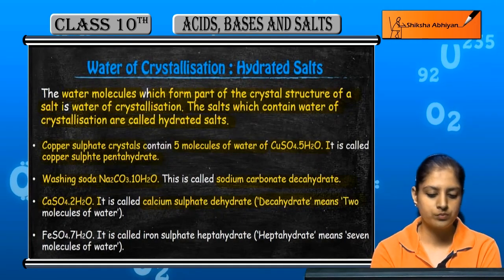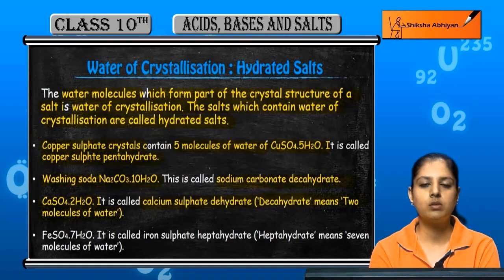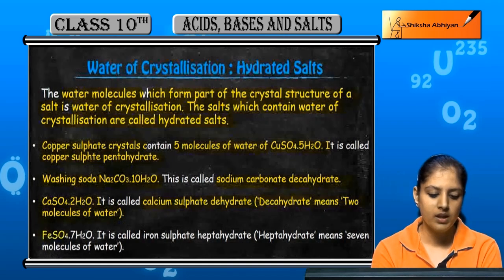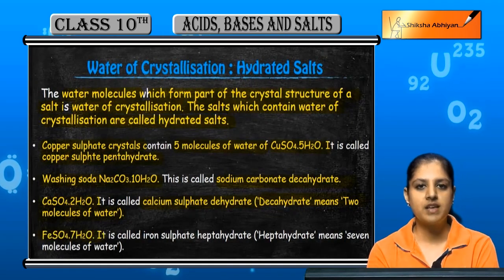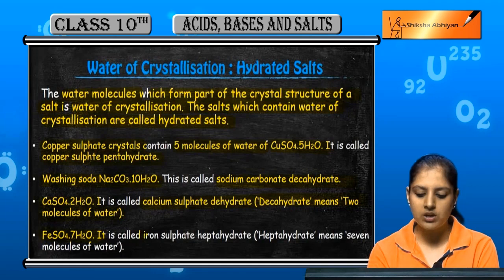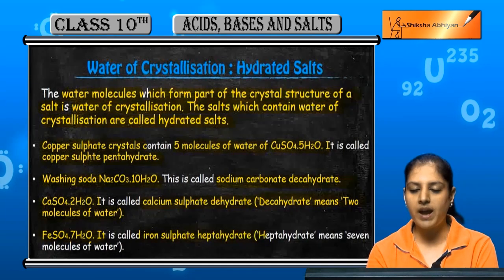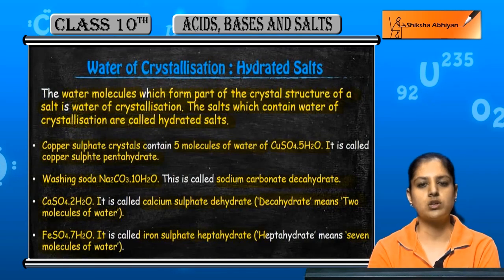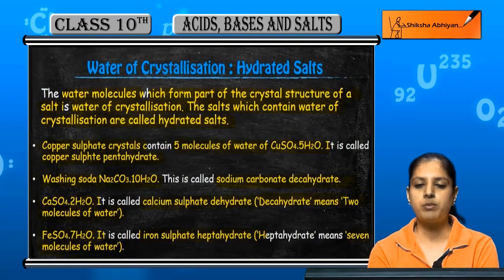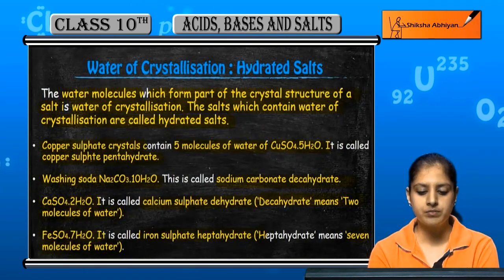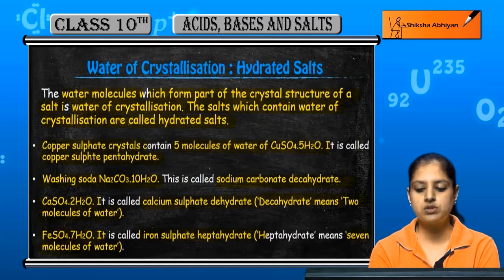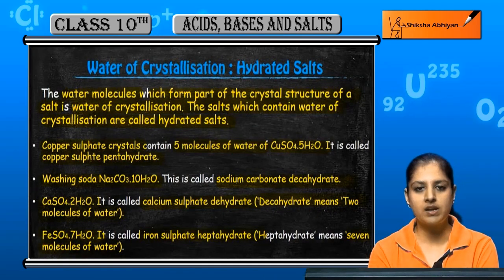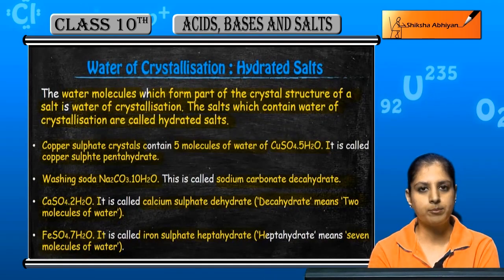Dihydrate means two molecules of water of crystallization. FeSO₄·7H₂O is called iron sulfate heptahydrate — hepta means seven molecules of water. To summarize: 5 molecules gives pentahydrate (copper sulfate), 10 molecules gives decahydrate (Na₂CO₃), 2 molecules gives dihydrate, and 7 molecules gives heptahydrate.